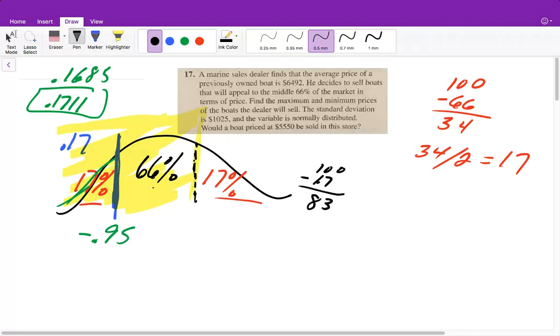We can find the percentage that we would need by 100 minus 17, which would then be 83. So that means we're looking for the value closest to 0.83. When we find that one, we'll see that is a positive 0.95 Z-score. So then it says find the maximum and minimum prices of the boat the dealer will sell.